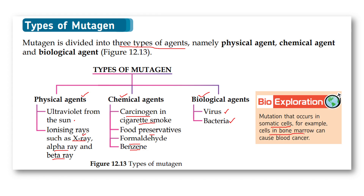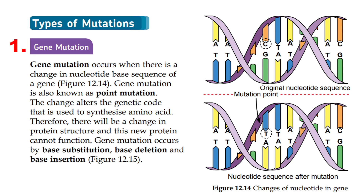Mutation that occurs in somatic cells — for example, cells in the bone marrow — can cause blood cancer.